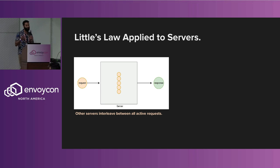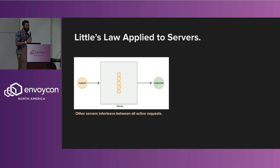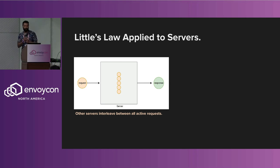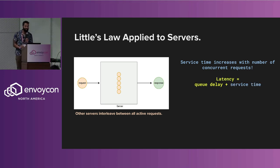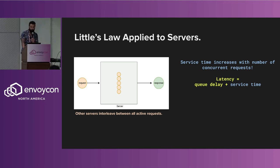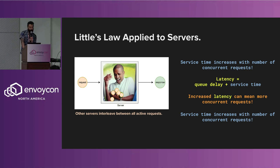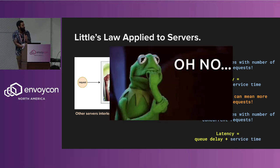In other cases, we have a server that just takes a request, spins off a Go routine, and keeps doing this. We end up in a scenario where we're interleaving between all of the requests. So the service time for a request is some function of the number of active requests we have in the system. The service time is going to increase as you get more requests, and since latency equals queue delay plus service time, we're directly increasing the amount of time it takes to work on a request as we put more in. Increased latency means more concurrent requests, which increases service time further — you end up in this feedback loop.